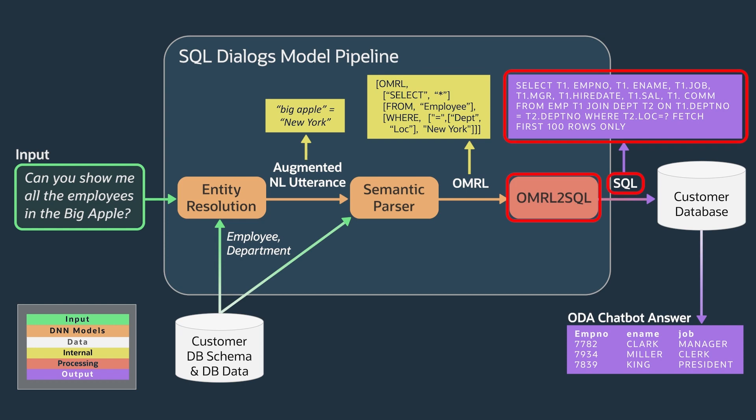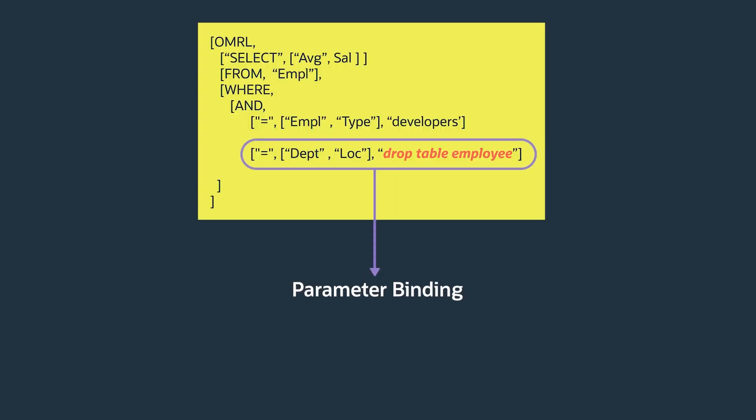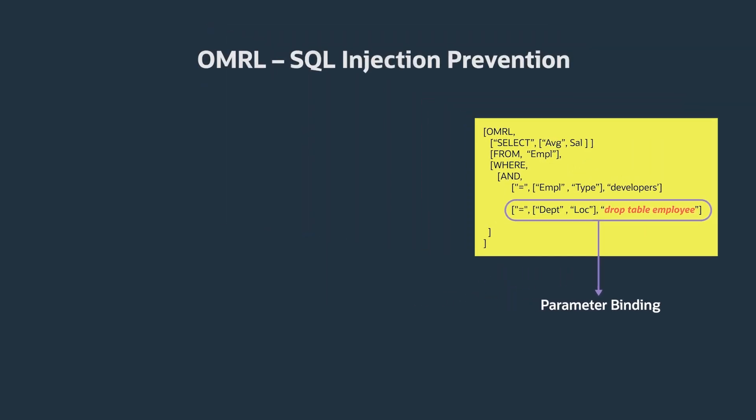OMRL is a kind of intermediate representation language for queries similar to SQL, and it lets us handle joins in a standardized way. Why do we actually need to transform the natural language query into OMRL as an intermediate step rather than just generating SQL directly? The semantic parser generates OMRL as a structured object. This allows us to use industry best practices such as parameter binding libraries that detect and foil SQL injection attacks when generating SQL.